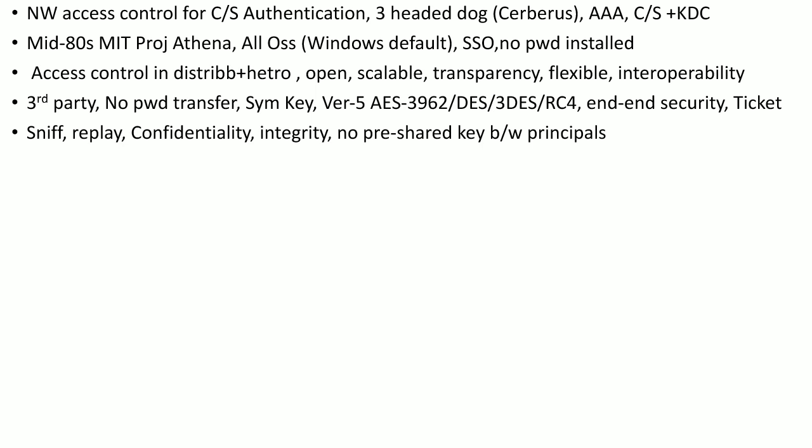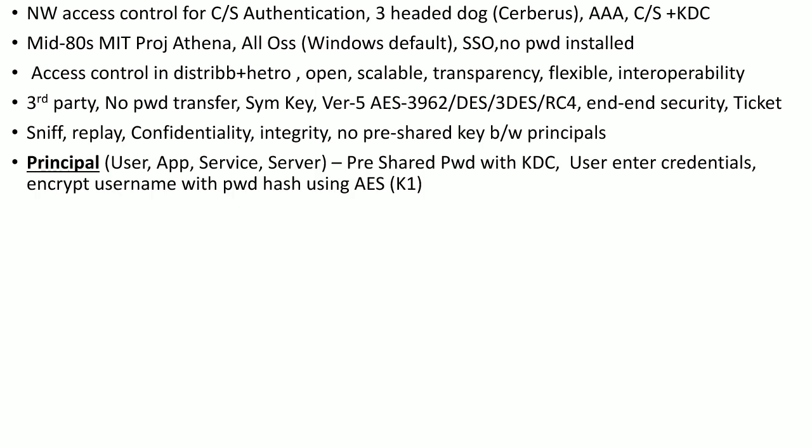There is no pre-shared key between principals. Principals are the client and the server. Everything is trusted through the third party — the KDC — when communicating between principals. Principals can be a user, application, service, or server. Each principal has a master key; for a user, this is their password hash, which is maintained in the KDC database. When a user enters credentials, the username is encrypted with the hash of the password using AES.